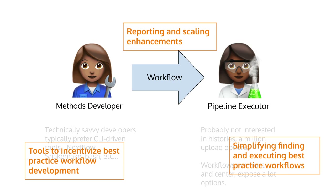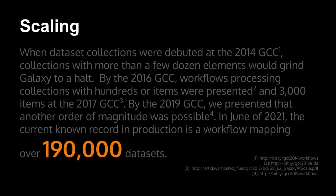So these are all things we are doing to incentivize the methods developers. Now we'll jump up to the workflows where we've improved reporting and scaling. When we debuted dataset collections, the point was to scale workflows, and collections could allow processing of a few dozen elements at a time. By the 2016 GCC, we were seeing presentations talking about hundreds of items being processed. By the 2017 GCC with a bunch of optimizations, dealing with 3,000 items was possible. By the 2019 GCC, another order of magnitude was possible. And in June of 2021, the current known record in production is a workflow mapping over 190,000 datasets.